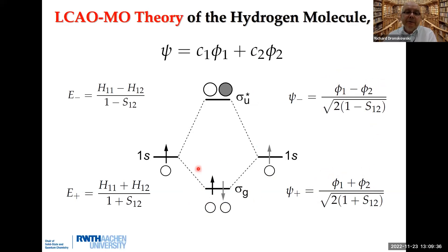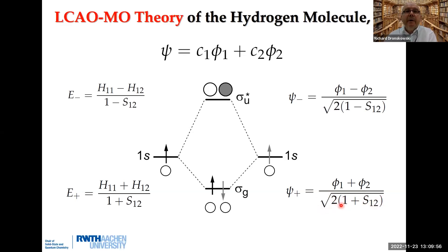Two electrons are shared, but it has nothing to do with shared electrons — it is the interference of wave functions. If the overlap integral between the two 1s orbitals is, say, 0.5, then the normalization denominator is larger for the bonding combination than for the antibonding one. Therefore, the stabilization is a little smaller than the destabilization. This is very important to remember.